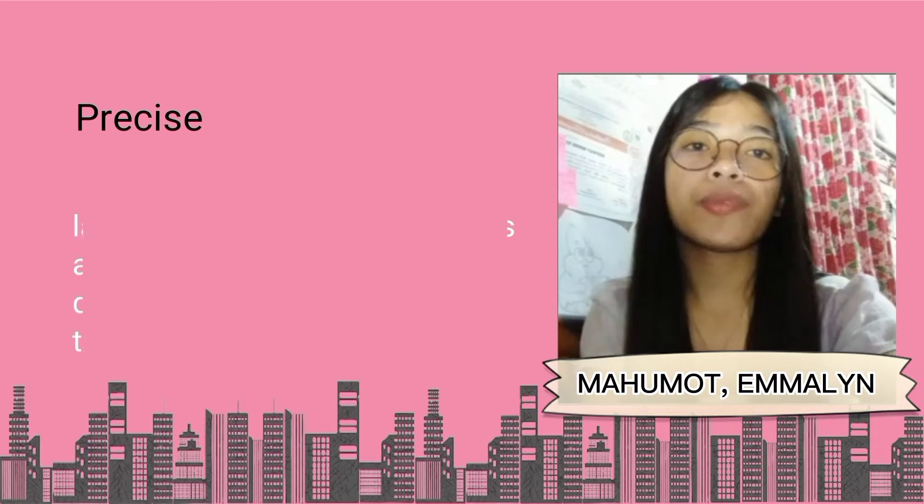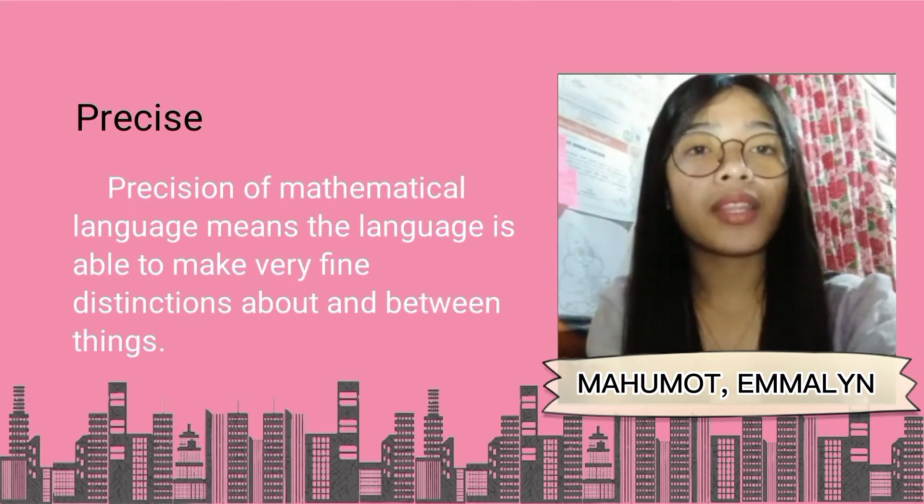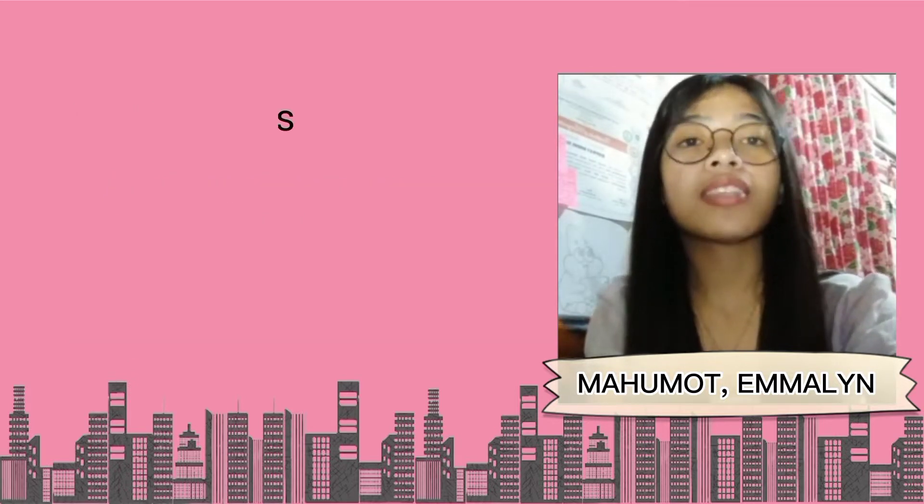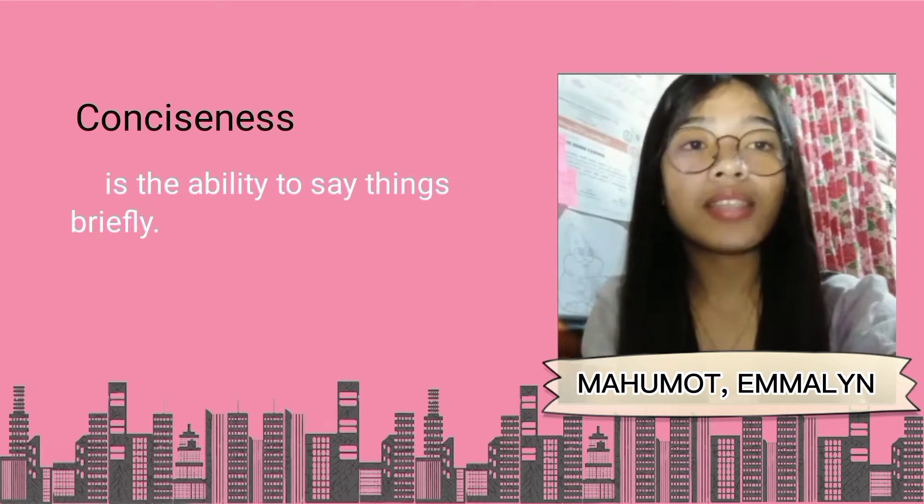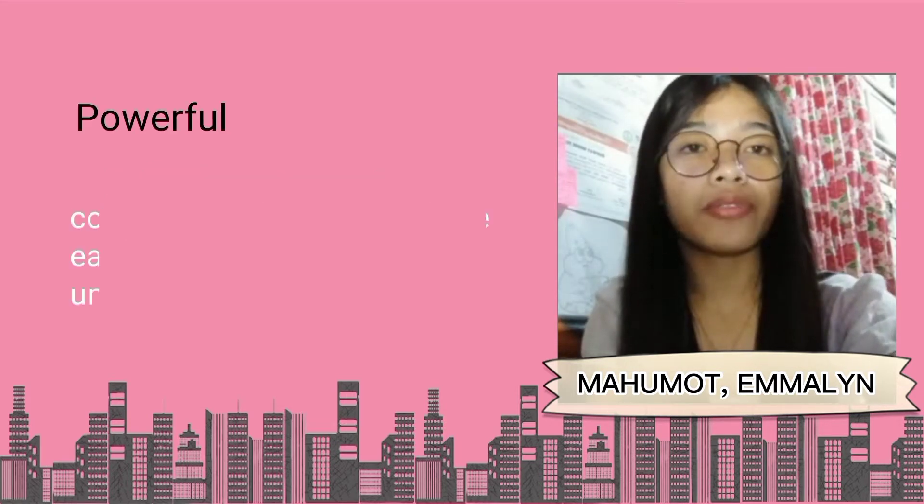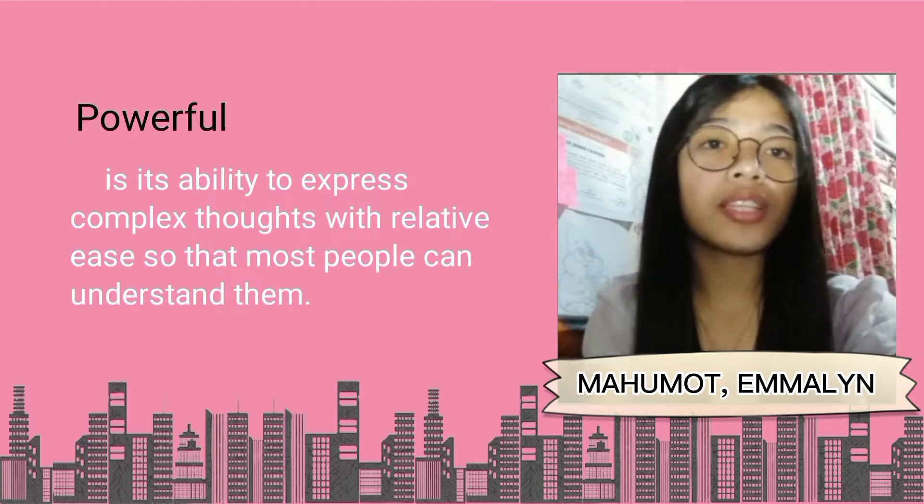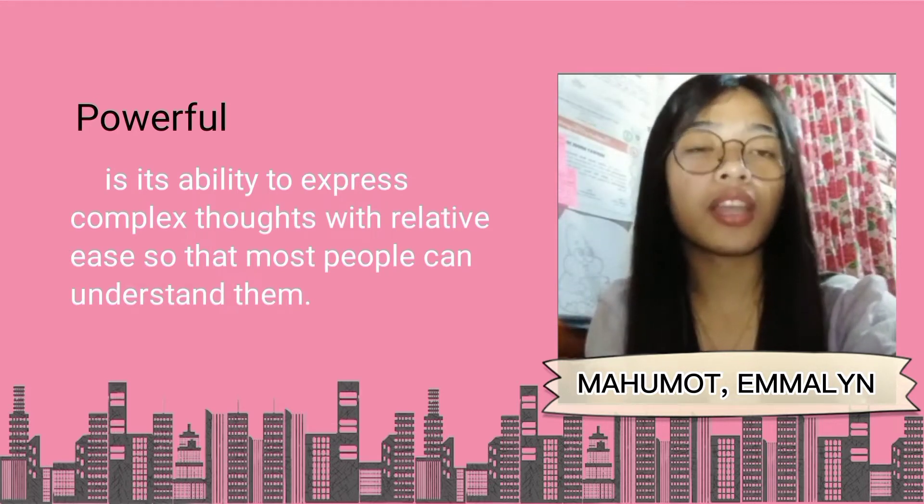The first one is precise. Precision of mathematical language means the language is able to make very fine distinctions about and between things. The second is conciseness. It is the ability to say things briefly. And the last one is powerful. It is ability to express complex thoughts with relative ease so that most people can understand them.